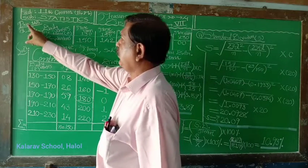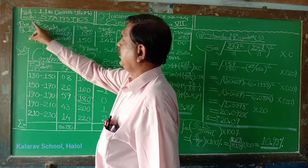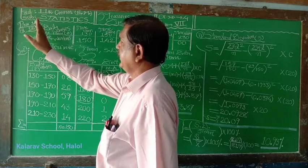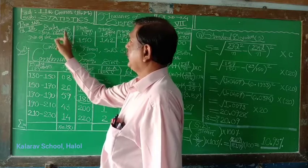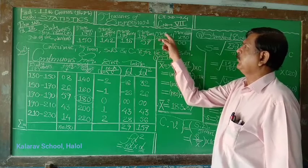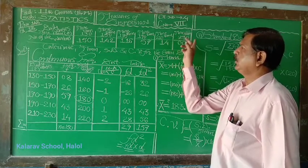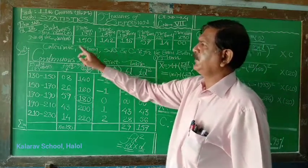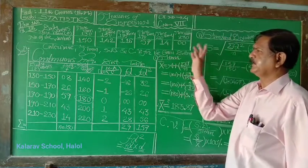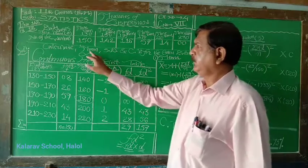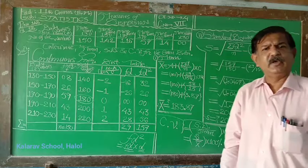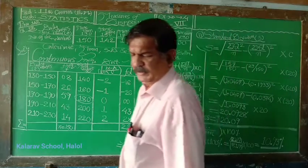In our textbook, on page number 148, the example shows delivery is more than 130, more than 150, more than 170, more than 190, more than 210, more than 230. And number of workers: 150, 142, 116, 57, 14, 0. Calculate mean, standard deviation, and coefficient of variation for the same.